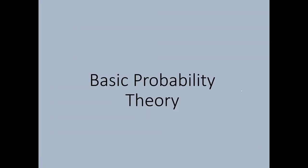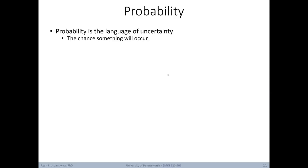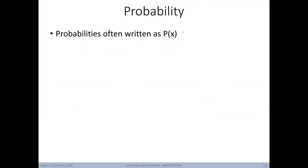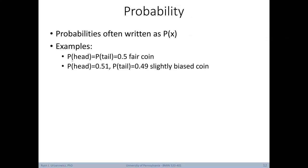Let's dive into what might be a refresher — covering basic probability theory. Probability is the language of uncertainty, and it asks: what is the chance that something will occur? Probability can be expressed mathematically as a numerical index with a range between 0 and 1, where 0 represents an absolute impossibility and 1 represents an absolute certainty. We can also think of this in terms of percentages from 0 to 100. The notation for writing probabilities looks like p(x), or the probability of x. For a fair coin, the probability of tossing heads or tails are both equal to 0.5.